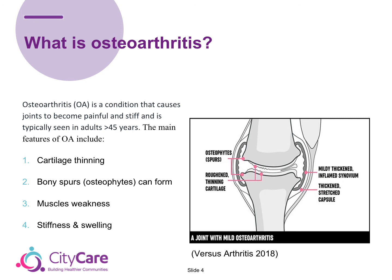The main features of OA include cartilage thinning. Cartilage thinning occurs where the lining of the bone ends becomes thinner and rougher. This causes the joint to repair itself by remodeling bone at the joint edges. These are known as osteophytes or bony spurs. This process is known as wear and repair — wearing of the cartilage and then repairing in the form of bony spurs or osteophytes.